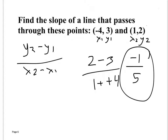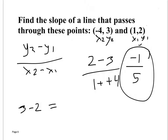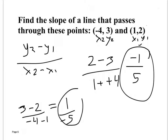I'm going to do it the other way to show you the order doesn't matter. Switching the points: three minus two is one, over negative four minus one which is negative five. I got the same answer. It doesn't matter on the order — you can make this one your second point or vice versa, as long as you keep x2 and y2 together and x1 and y1 together.